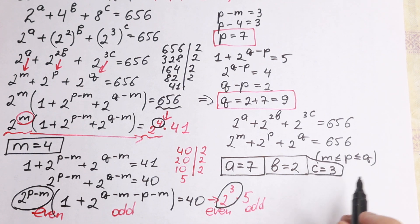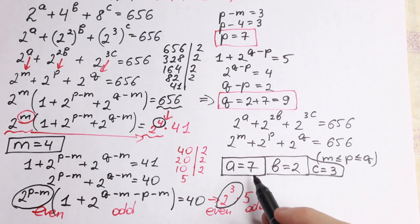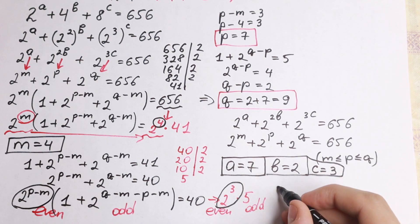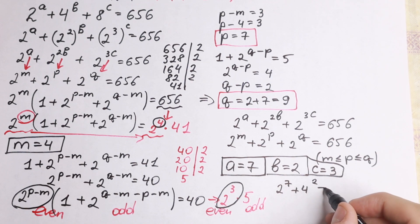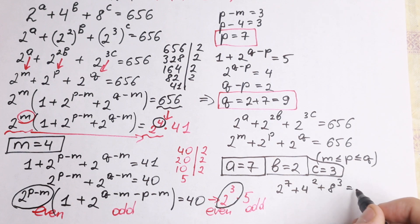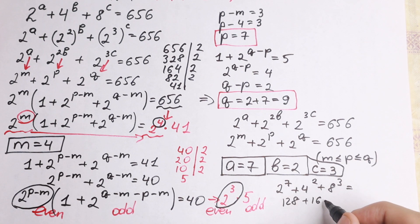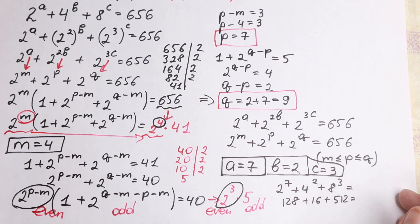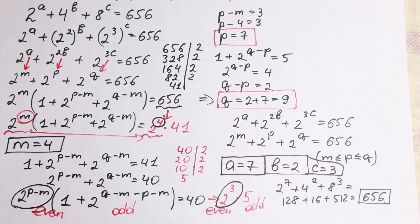Let's check: 2 to the seventh power plus 4 squared plus 8 cubed. That equals 128 plus 16 plus 512, which equals 656. It checks out! So we found our roots: a equals 7, b equals 2, c equals 3.